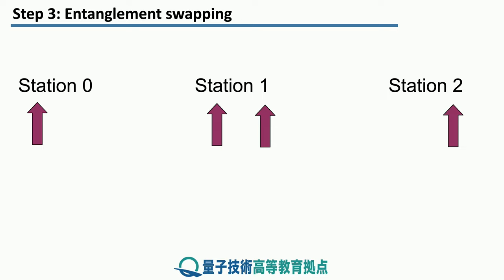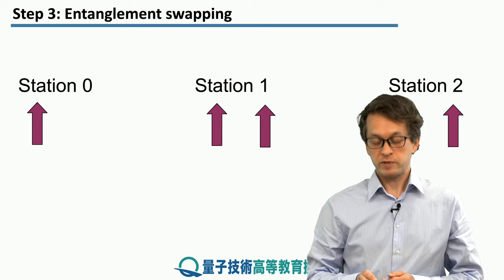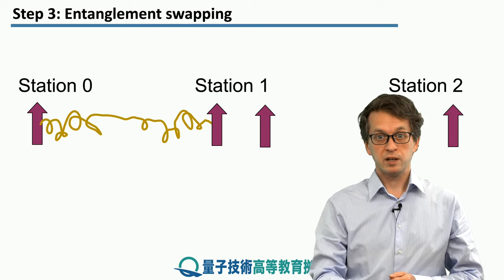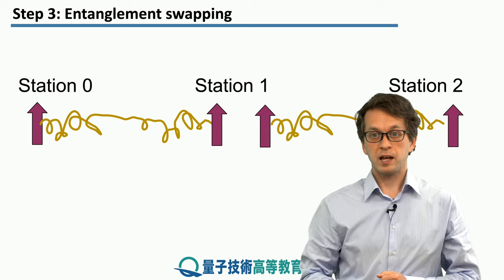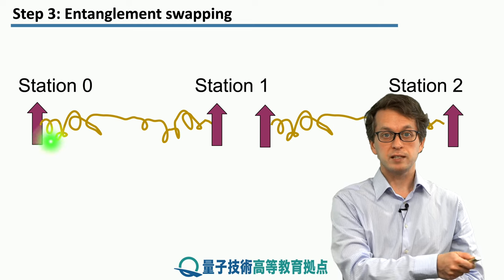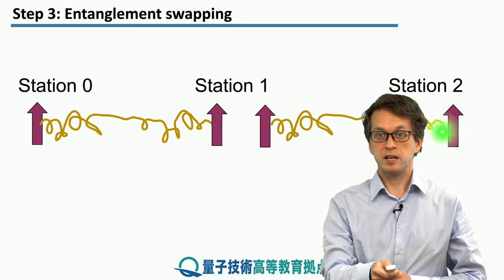Let's consider that we have three network nodes: station 0, station 1 which holds two qubits, and station 2. We have already gone through the steps of establishing entanglement between neighbors. Station 0 has a qubit entangled with a qubit at station 1, and station 2 has a qubit entangled with a different qubit also at station 1. The goal is to establish entanglement between station 0 and station 2.